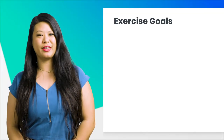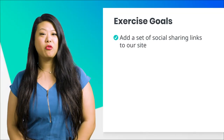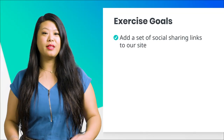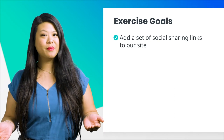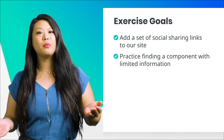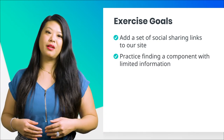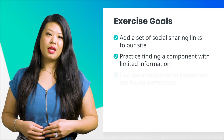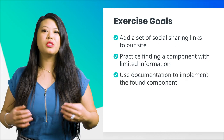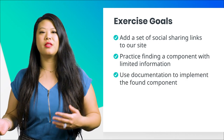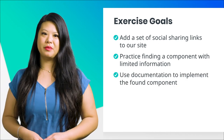Now let's add some social sharing links to our cheese bike site. We have three goals for this exercise: we'll add the social share links to our site, we'll practice finding a component with limited information, and we'll use documentation to implement the component we found.